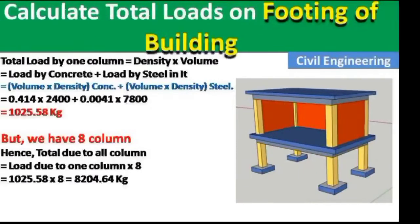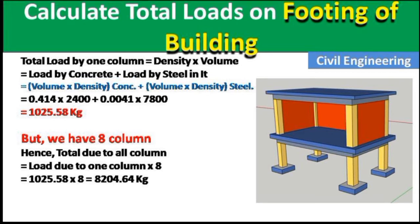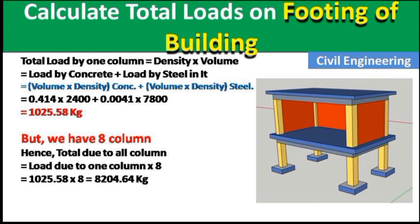Total load by one column = (Load by concrete) + (Load by steel). For concrete: Volume × Density. For steel: Volume × Density. Putting all values in: concrete and steel loads are calculated separately and added together. The total load of one column = 1025.58 kg.